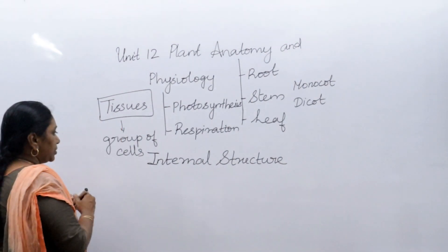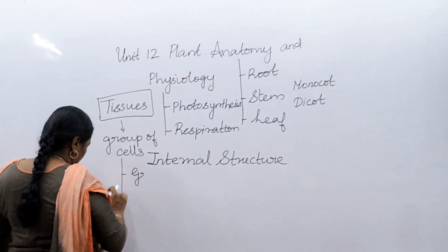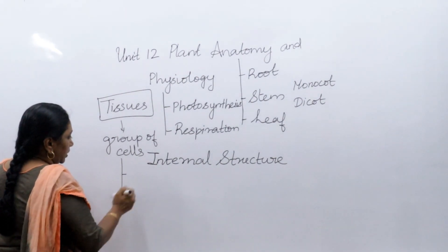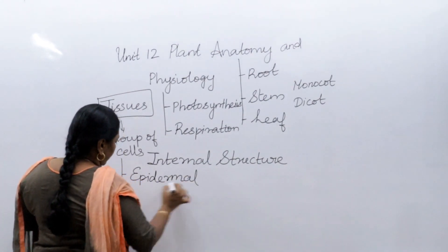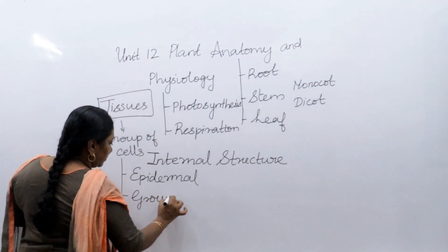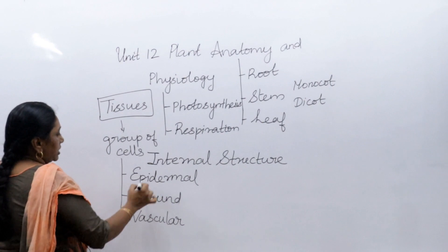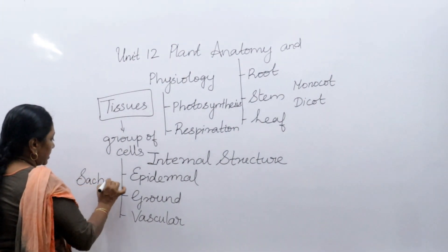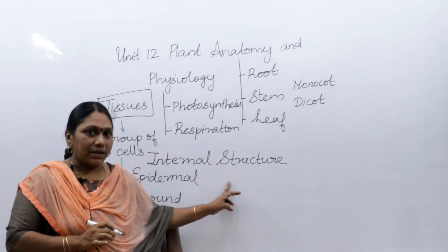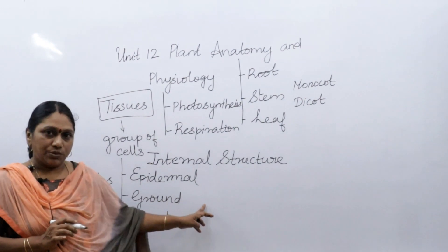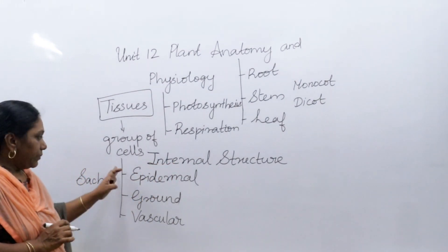In a plant body we have three types of tissues: one is the dermal or epidermal tissue system, the second is the ground tissue system, and the third is the vascular tissue system. These three types were proposed by a scientist called Sachs.